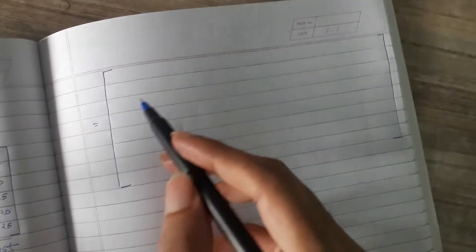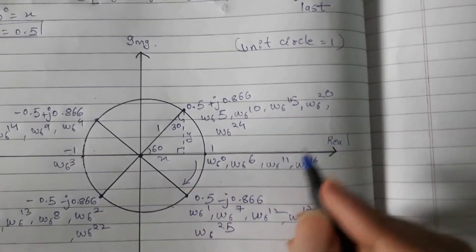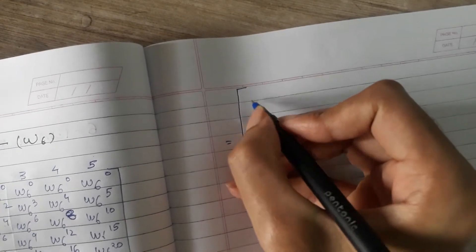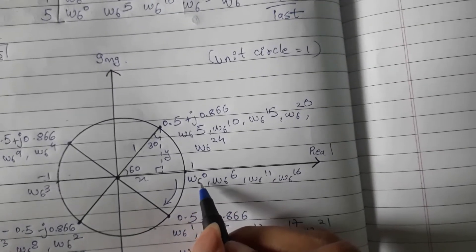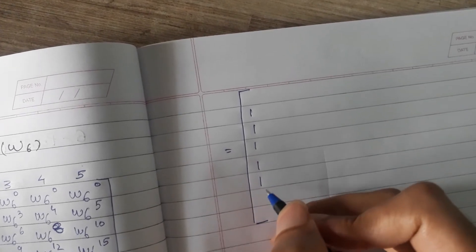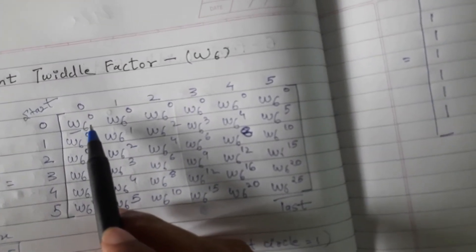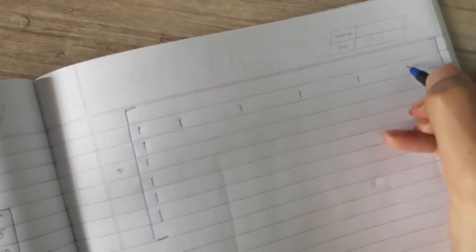After you know this diagram, on the next page you can draw this matrix, and from here W6 raised to 0 we can find our point. W6 raised to 0 is 1, so here all the points on W6 raised to 0, we can write 1, 1, 1, 1, 1, 1 for all six entries.